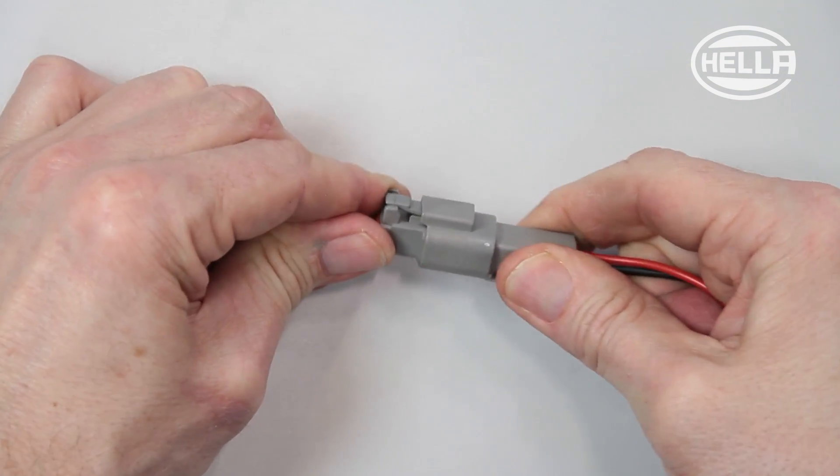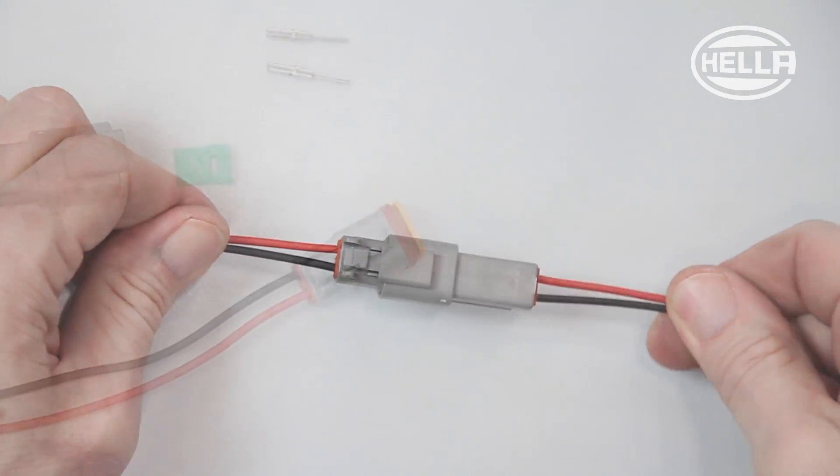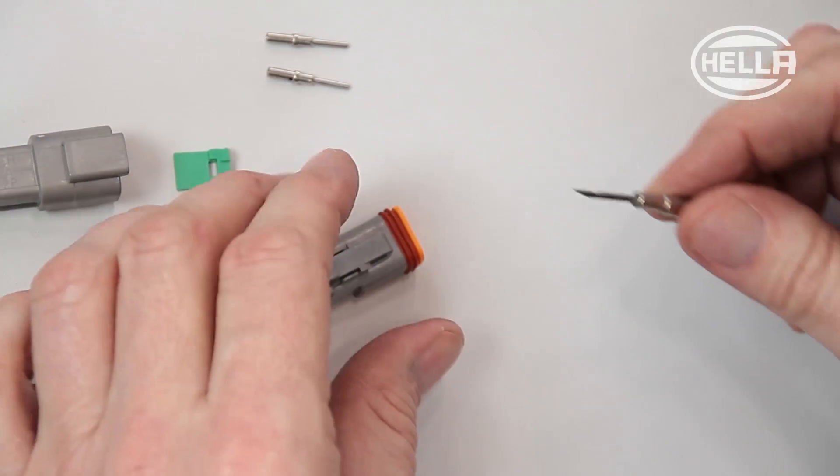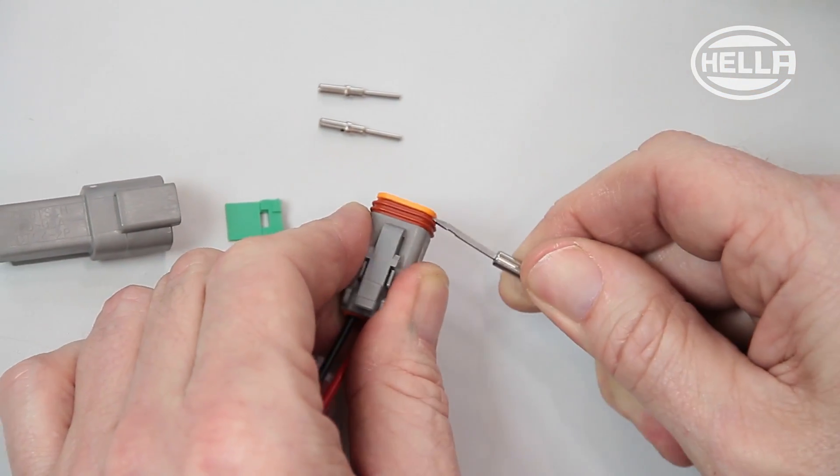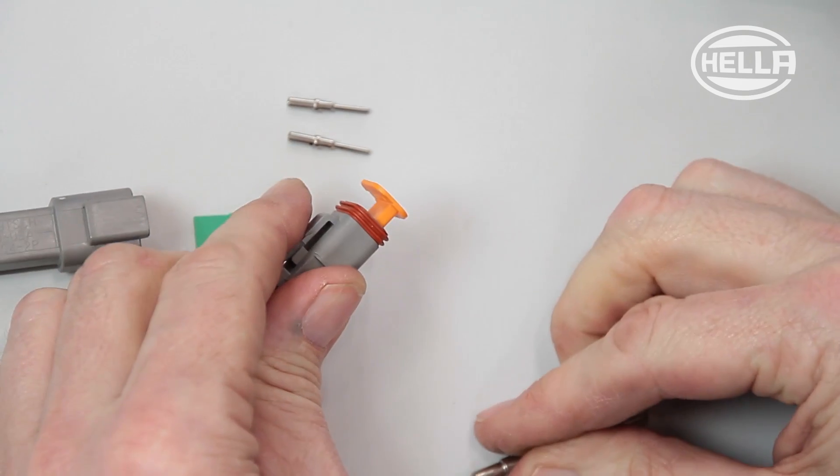To disassemble a DT plug connection use the appropriate release tool which is also available as part of the range. First position the tool at the recess in the secondary fuse and lever it off the connector.